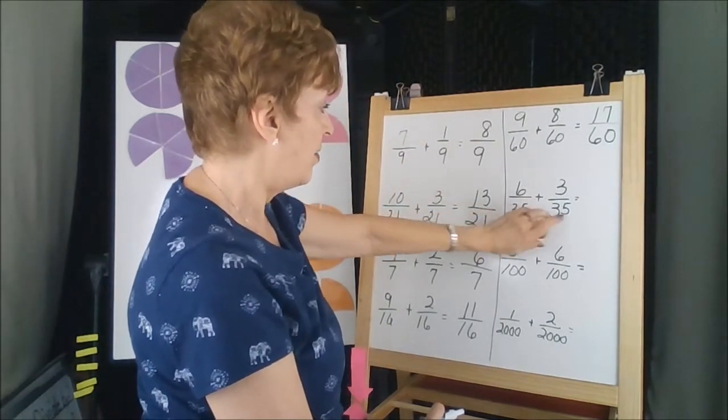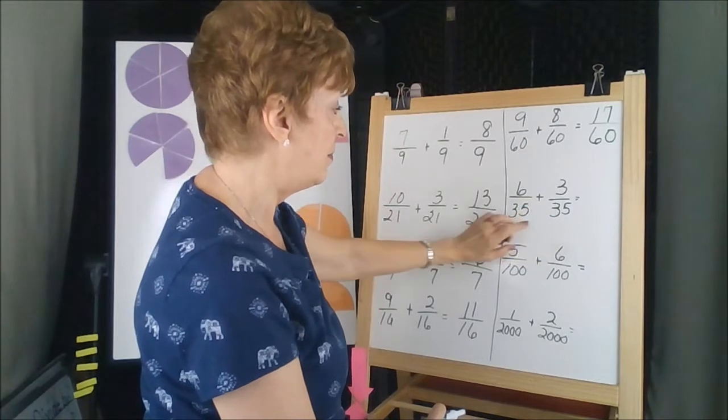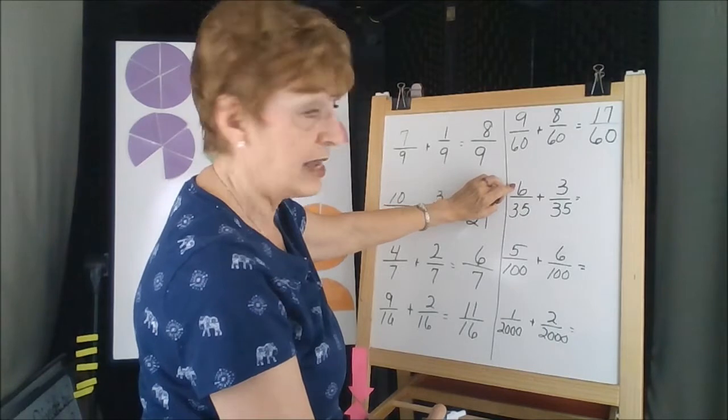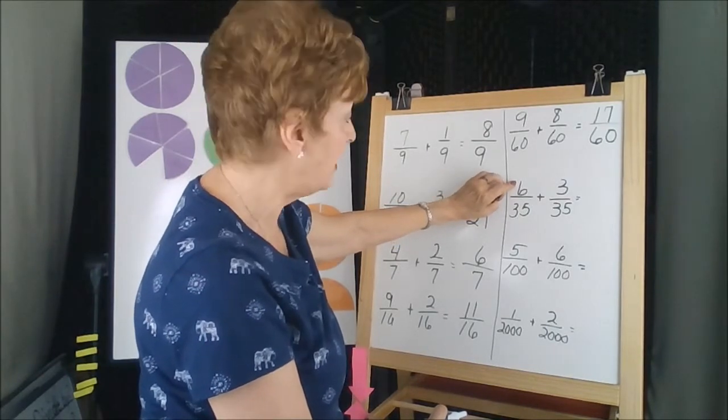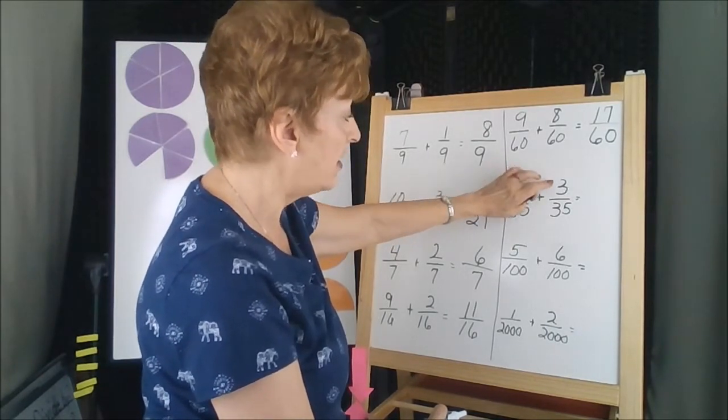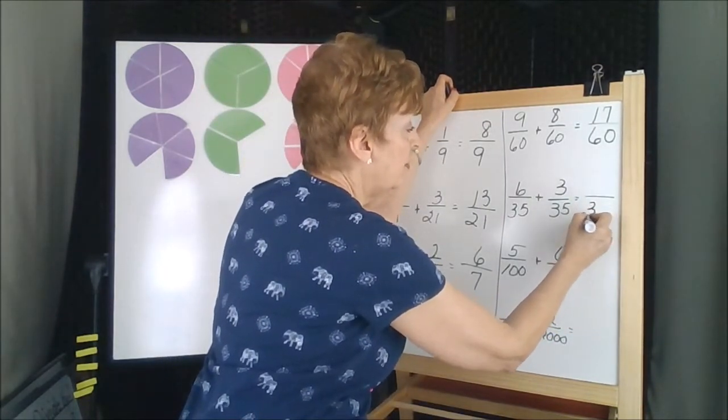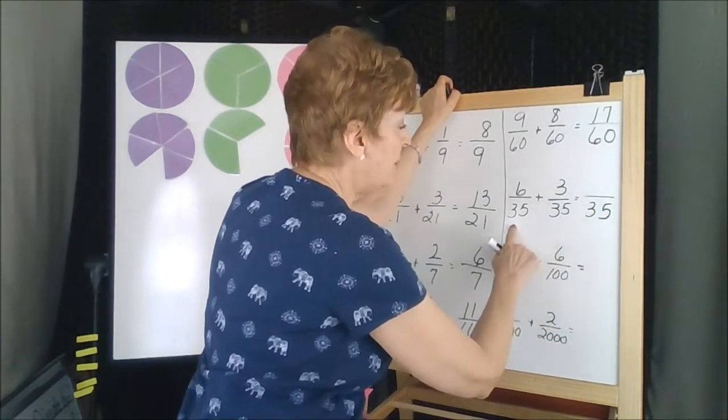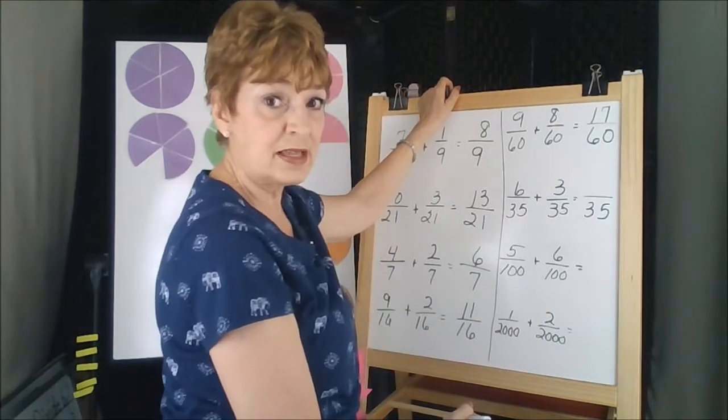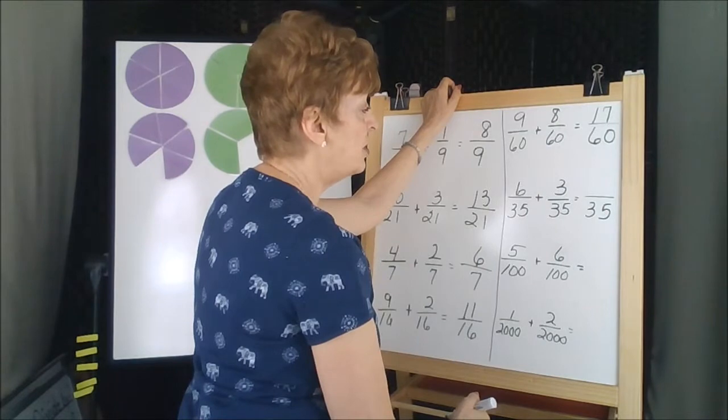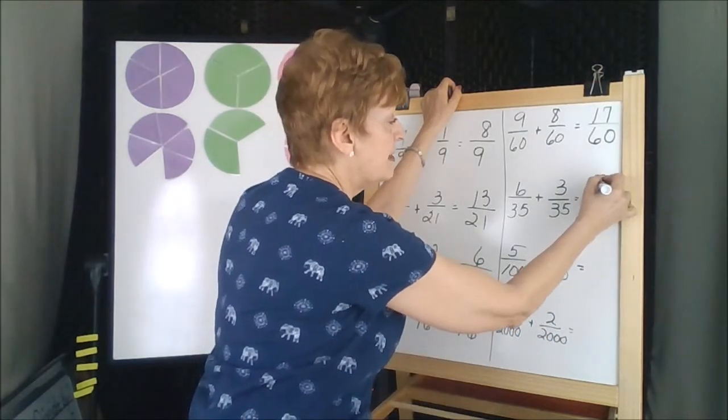There are 35 pieces in both of these fractions. They have the same size. The six is the same size. These six pieces are the same size as these three. So we get to copy over the 35 because that's our label for the size of the piece. And then add the top numbers, the numerators. Six plus three is nine.